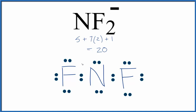If we look at the formal charges, each one of these fluorine atoms has a formal charge of 0. And then the nitrogen in the center, that's minus 1. So this negative charge up here is on the nitrogen.